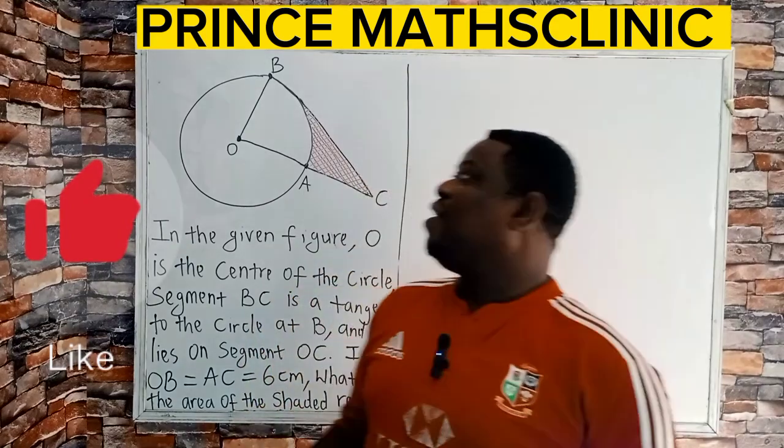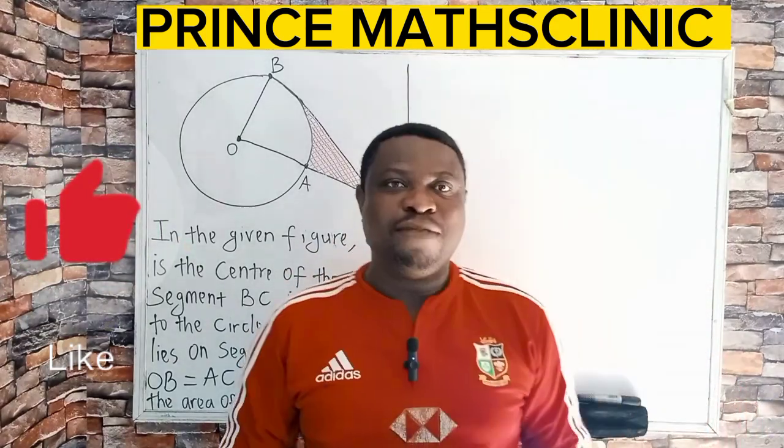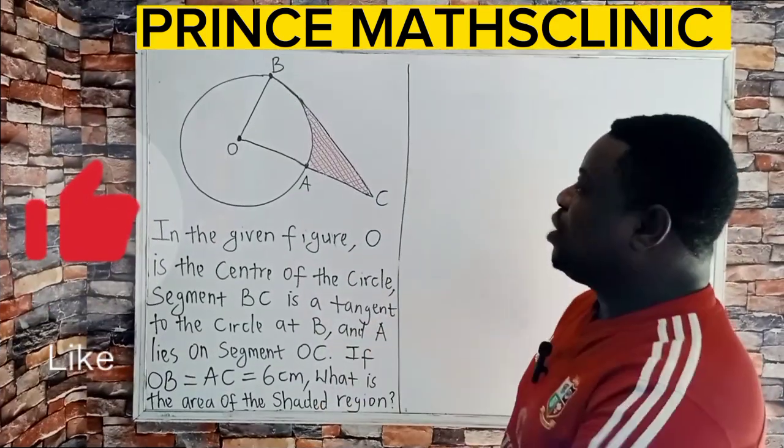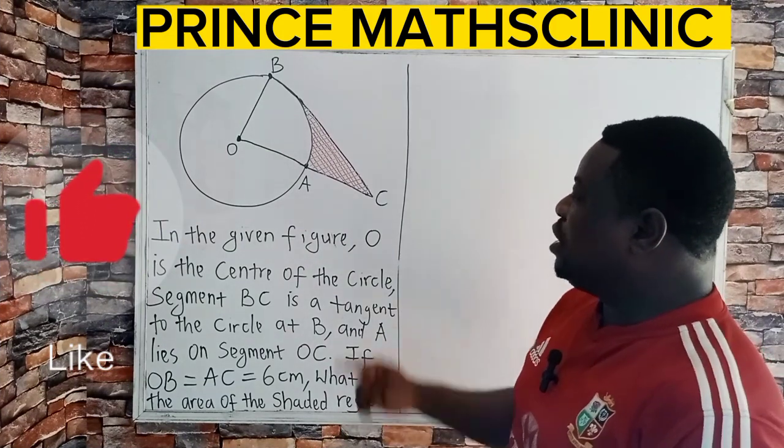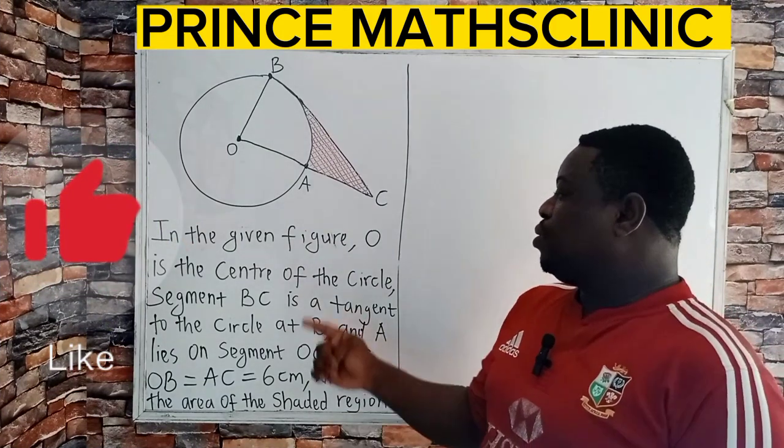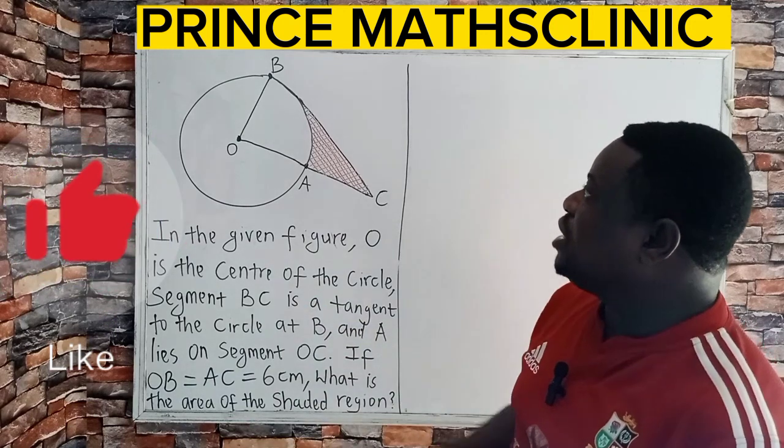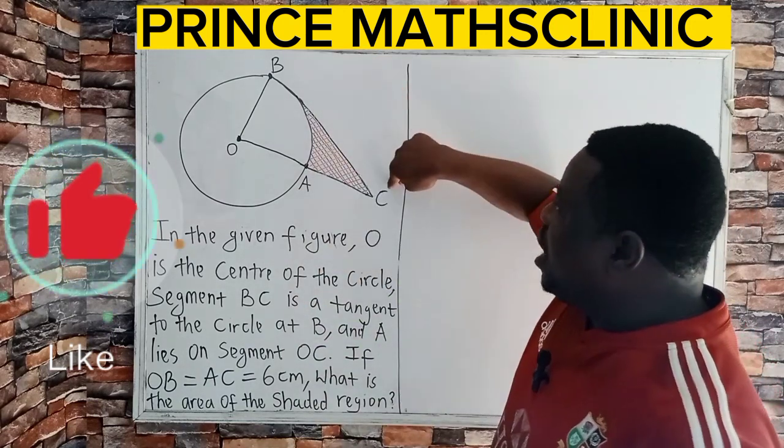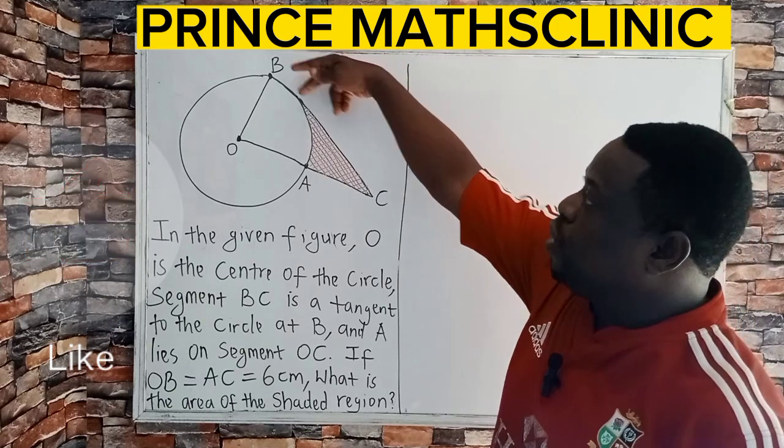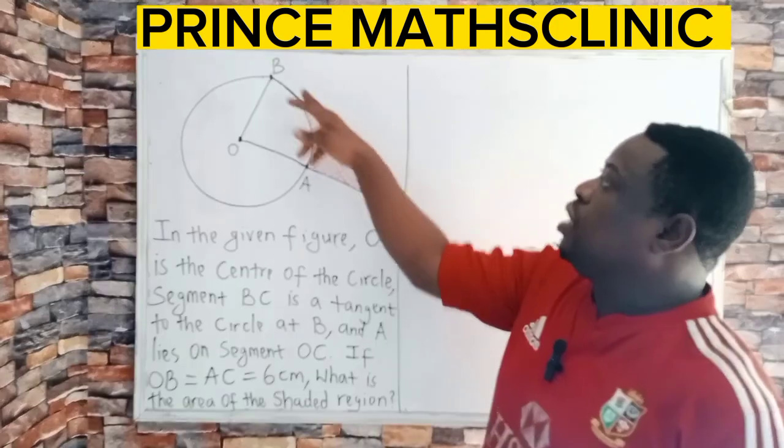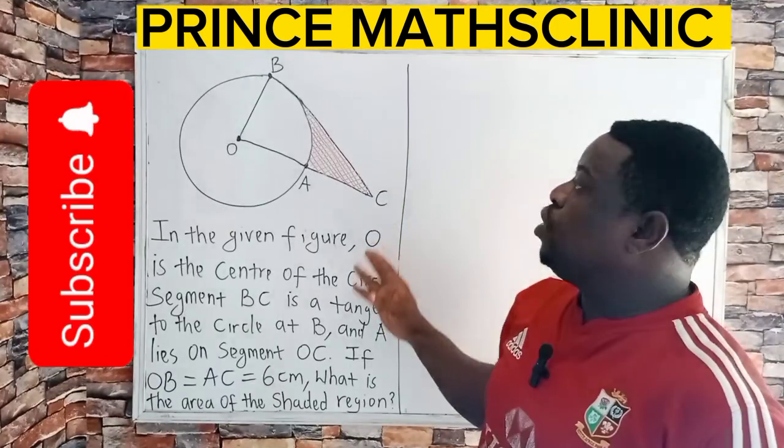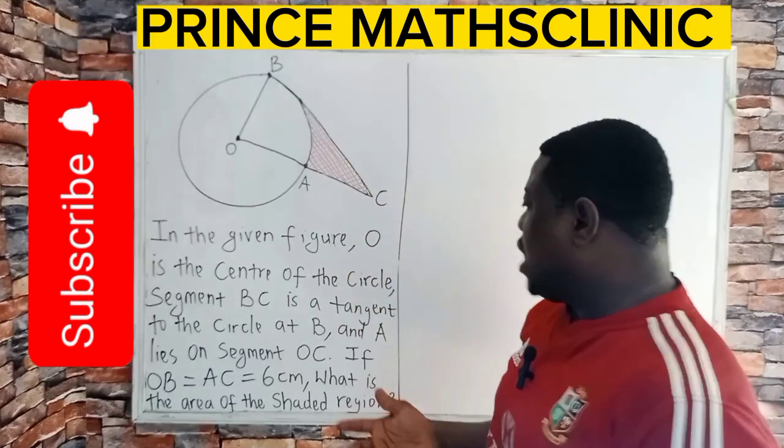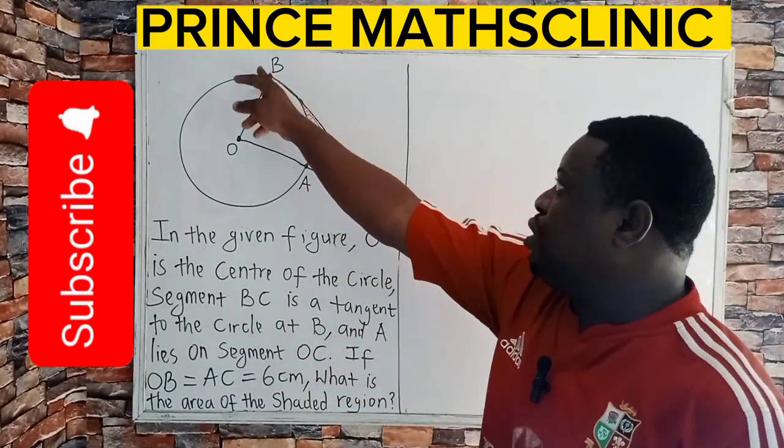Here we have a very interesting SAT math question. The question says in the given figure, O is the center of the circle, segment BC is a tangent. That means from here to here is a tangent because it cuts just a particular point on the circumference of the circle. Any line like that is called a tangent to the circle at B.